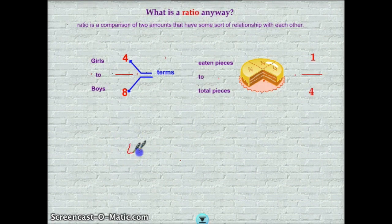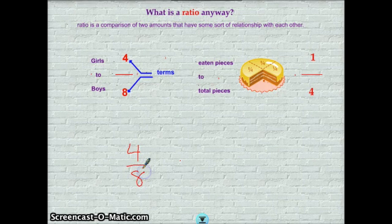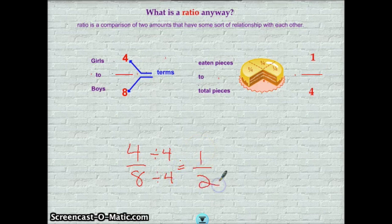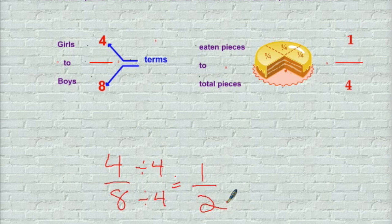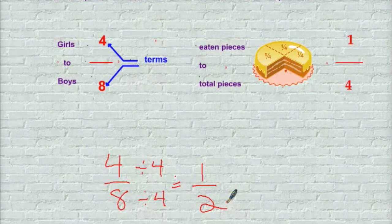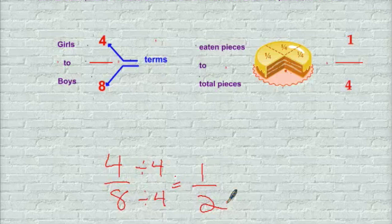So I would simply take my ratio of four to eight, and I would see that the common factor was four. So I'd go ahead and divide each of those by four. And of course, I would get a new ratio in simplest terms of one to two. So we could say the ratio of girls to boys in this classroom is one to two. Or in other words, for every girl in the classroom, there are two boys.